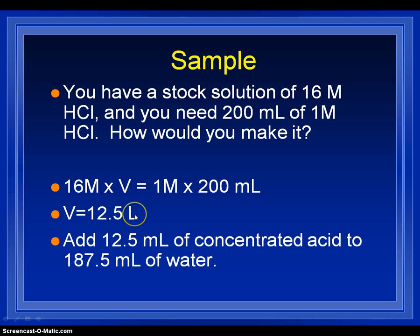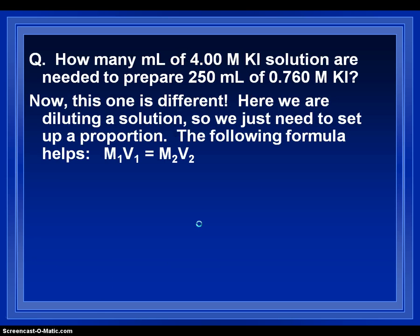Of concentrated hydrochloric acid. So, what that means, what that volume means, is that I would measure out 12 and a half milliliters of concentrated acid, and I would add that to 187.5 milliliters of water. So, overall, at the end, my total volume would be 200 milliliters.